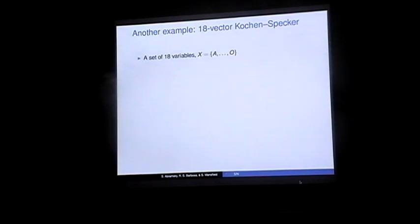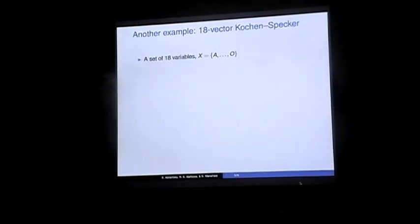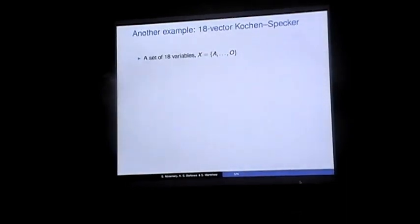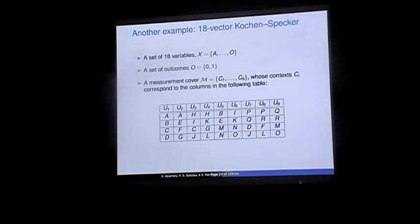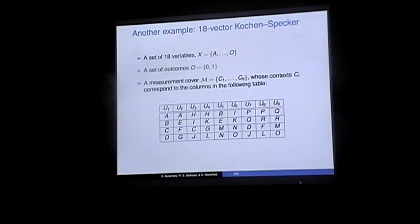Another quick example is the 18-vector quotient scenario, where you have 18 variables, again two outcomes, and the measurement cover is given by nine different contexts.